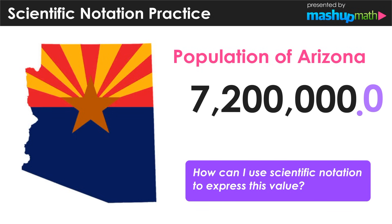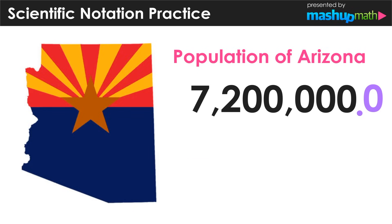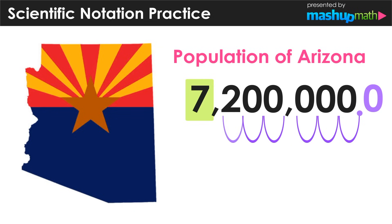We do this because scientific notation requires that we figure out the number of place values in between the decimal and the first non-zero digit, in this case 7. So now we can go ahead and count how many place values there are in between. And we can see in this example there are six place values. That total number of place values is an important number, and we're going to keep that close by to use in a few moments.